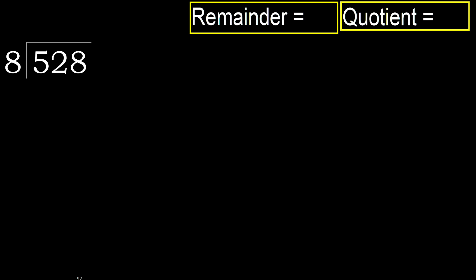528 divided by 8. 5 is less, therefore next. 52 is not less, therefore with 52. 8 multiply by which number is nearest to 52?